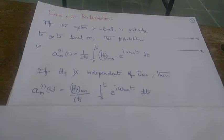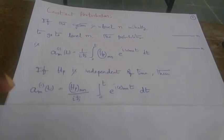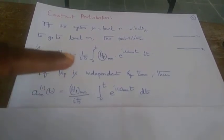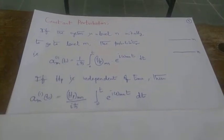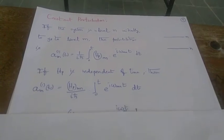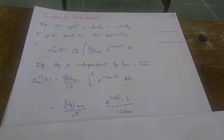In general, this H_p will be dependent upon time, but in case if it is a constant, then it can come out of this integral like this, and then the integration for exponential i omega_mn t will be the exponential divided by i omega_mn.